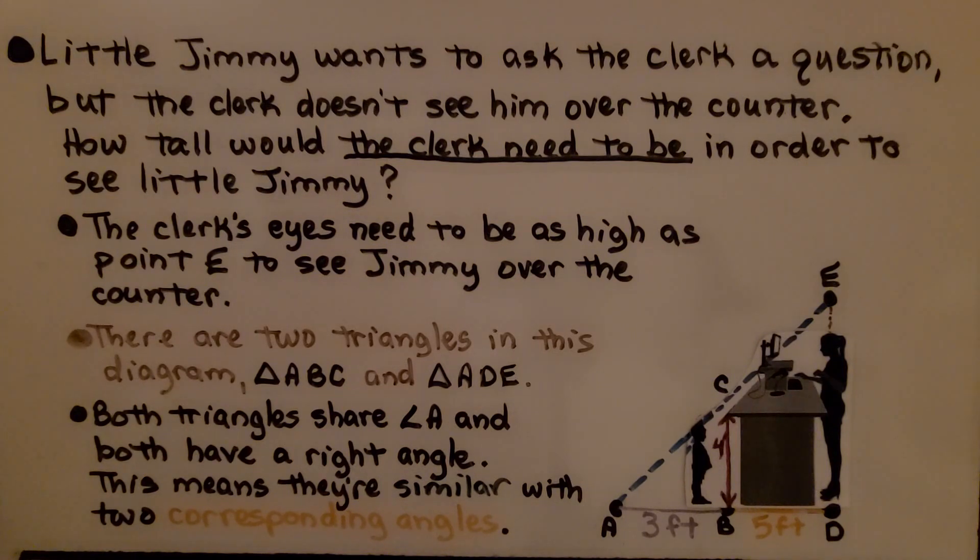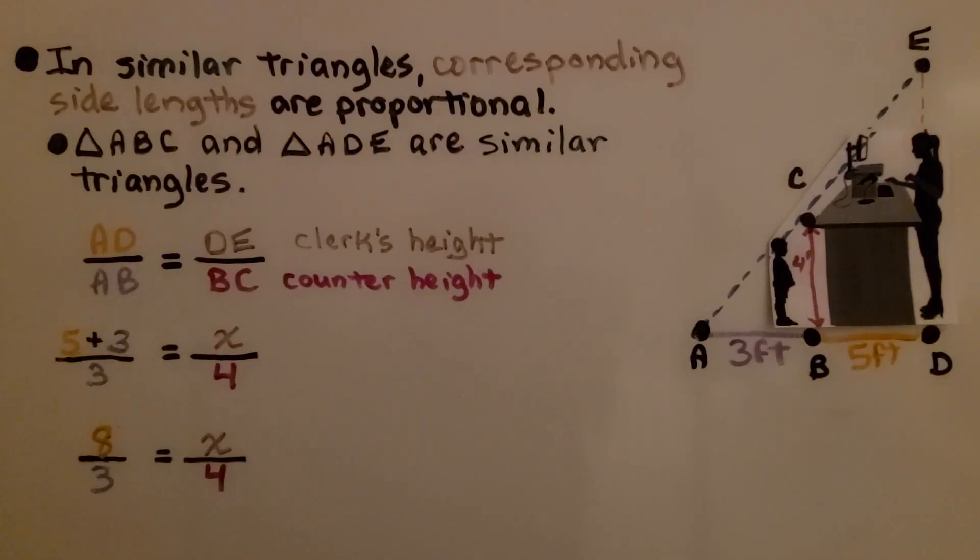There are two triangles in this diagram, triangle ABC and triangle ADE. Both triangles share angle A, and both have a right angle. This means they're similar with two corresponding angles. In similar triangles, corresponding side lengths are proportional. Triangle ABC and triangle ADE are similar triangles.